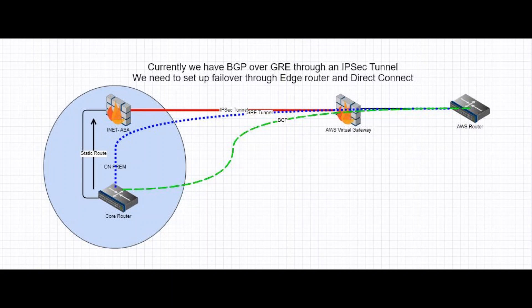It is directly connected. The BGP, which is the production link connecting these two infrastructures, is getting transported over the GRE tunnel. The core router has a static route pointing to the INIT ASA, where we have the crypto policy which tunnels the GRE source and destination IPs across the IPsec tunnel.